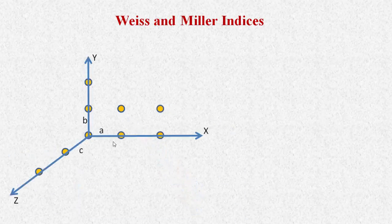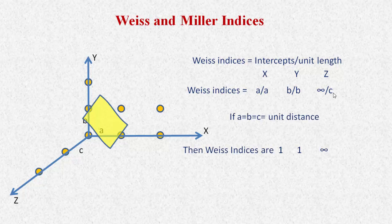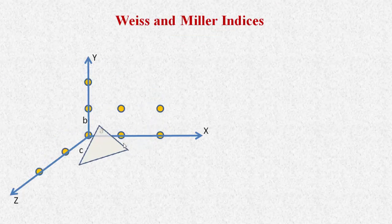Now consider a 3D coordinate system with X, Y, Z axes and a crystal lattice. Consider a plane which intersects both the X and Y axes but is parallel to the Z-axis. The Weiss indices are a/a on X, b/b on Y, and infinity/c on Z. For unit distances, Weiss indices are 1, 1, and infinity. The Miller indices are therefore 1, 1, 0. This plane is called the (1 1 0) plane, or sometimes the diagonal plane.